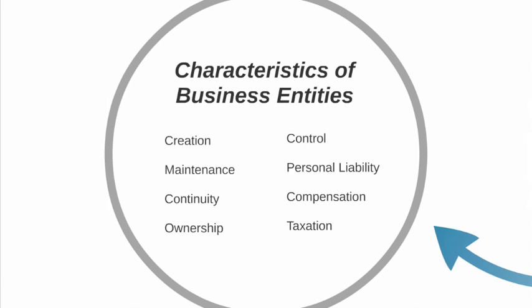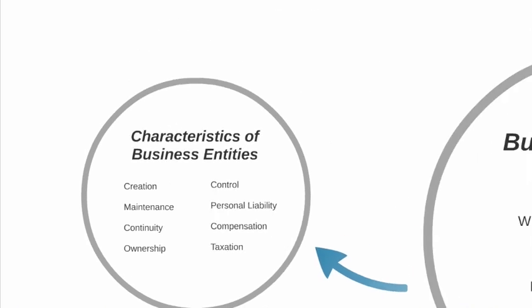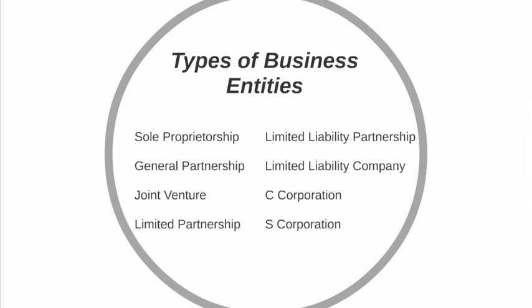Then we talk about compensation — how the owners, members, and employees of the business are compensated, and how they receive remuneration for their services or as a result of their ownership status. We also talk specifically about taxation of the business entity, spending more time on taxes a little bit later.